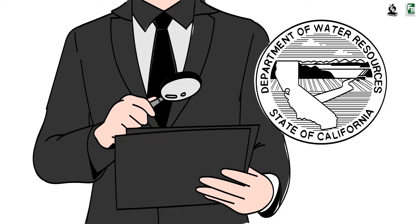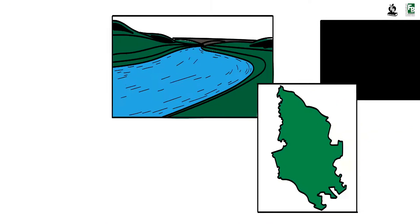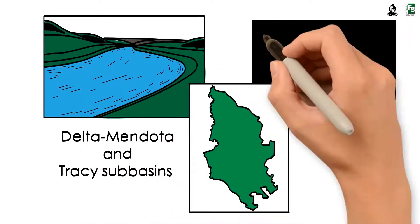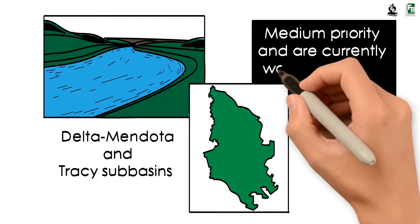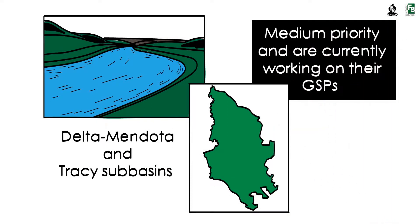the GSP will be implemented locally by the GSAs. The Delta Mendota and Tracy sub-basins are medium priority and are currently working on their GSPs, which do not need to be submitted until 2022.